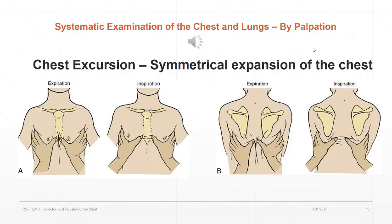That would be true for any extensive involvement of one lung or the other — we would expect the contralateral lung to expand more than the affected lung. That brings us to the end of this part of the lecture on systematic examination of the chest and lungs. The next part will take up auscultation and percussion.